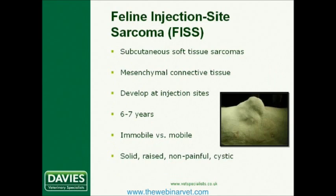Feline injection site sarcomas are subcutaneous tumours of mesenchymal connective tissue origin. Clinical presentation is usually of a soft tissue mass with a variable rate of growth at a common injection site, and usually quite easily palpable. They usually occur around 6-7 years of age, which is a lot younger than non-injection site sarcomas, which tend to present in more geriatric cats at around 11 years of age. A second peak in injection site sarcomas is also noted around this time as well.